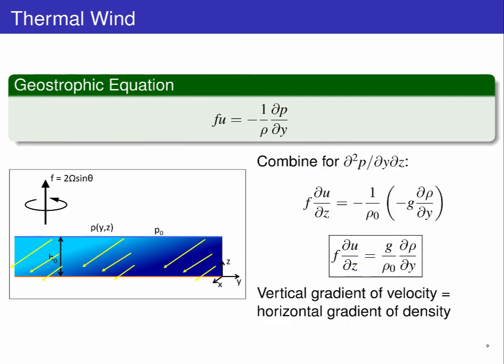This returns the vertical gradient of velocity as equal to the horizontal gradient of density. This is what we call the thermal wind equation.